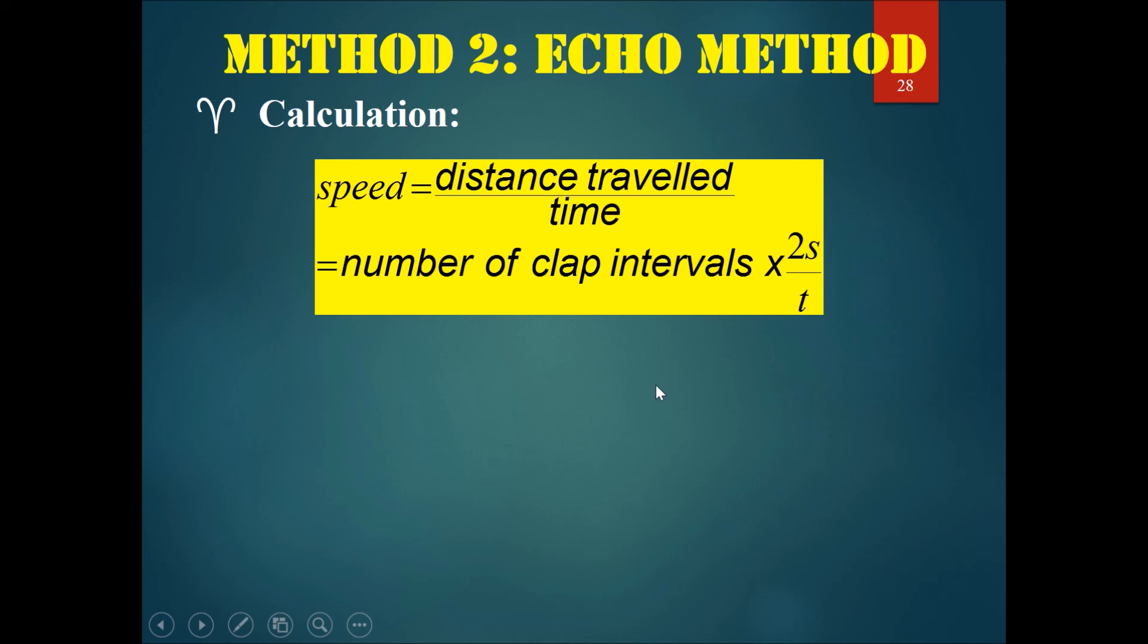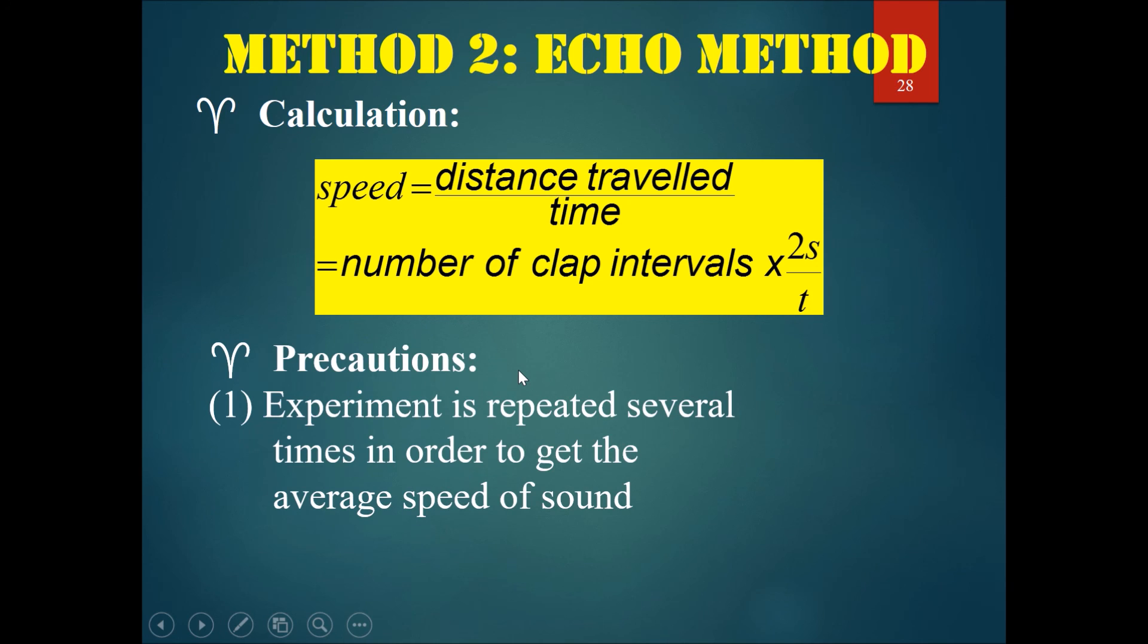Some precautions: of course, the simplest precaution is just to repeat the experiment several times in order to get the average speed.